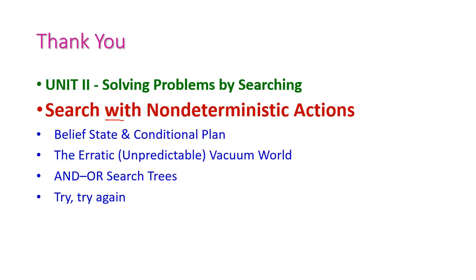So far we have seen the search with non-deterministic actions. Under this, we have seen the belief state and the conditional plan, the erratic vacuum world (unpredictable vacuum world), the AND-OR search tree, and the try-and-try-again search tree. This comes under the second unit: solving problems by searching in artificial intelligence. Please go through your textbook for more information. In the next class, we will see another important topic from the second unit.